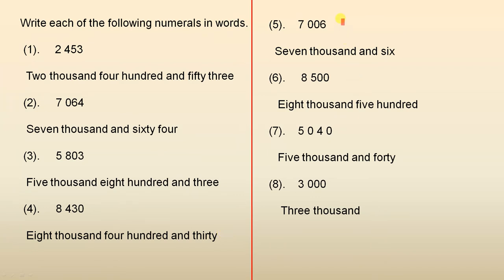Number five — that's the written form. Number six — the written form. Number seven — that's how we write it. And finally number eight — and that's how it's written.